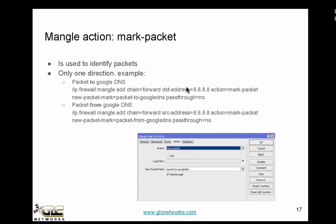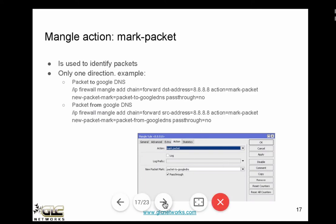Pass-through no means we don't forward the processing to the next rule. It's only one direction. To also mark packets coming from Google DNS, add another rule: chain forward, source address 8.8.8.8, action mark packets, new packet mark 'packet-from-google-dns'. Previously 'packet to Google DNS', now 'packet from Google DNS'. After marking, nothing else happens — it's only a packet mark.